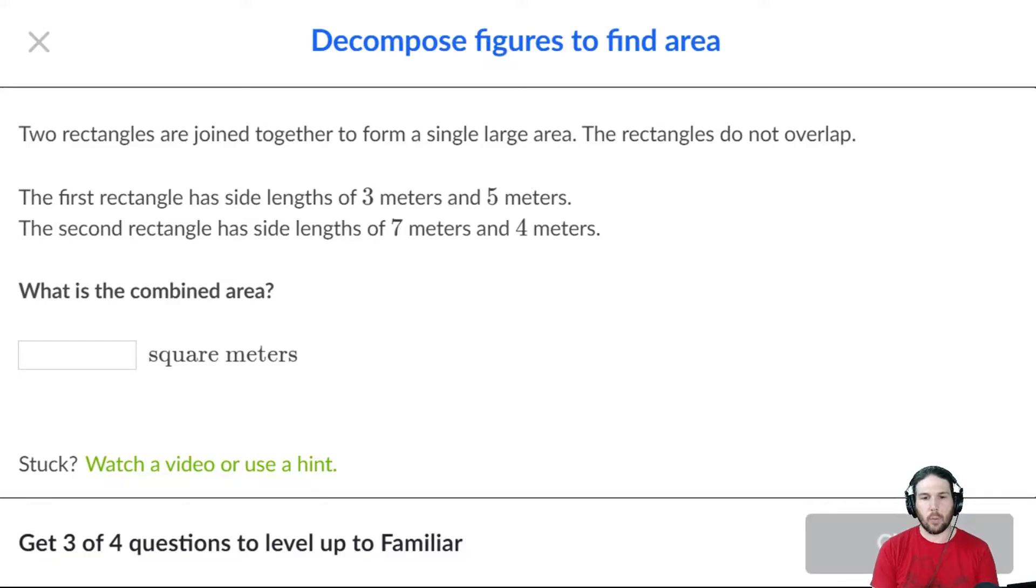We've got a first rectangle with a length of three and a width of five. And by the way, length and width are interchangeable. Doesn't matter which is which. It's just names. Names are important, but some of them are interchangeable.